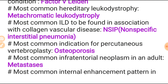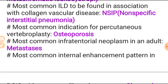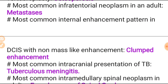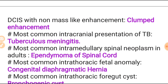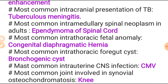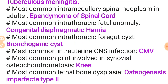Most common indication for percutaneous vertebroplasty is osteoporosis. Most common infratentorial neoplasm in the adult is metastasis. Most common internal enhancement pattern in DCIS with non-mass-like enhancement is clumped enhancement. Most common intracranial presentation of tuberculosis is tuberculous meningitis. Most common intramedullary spinal neoplasm in the adult is ependymoma of the spinal cord.